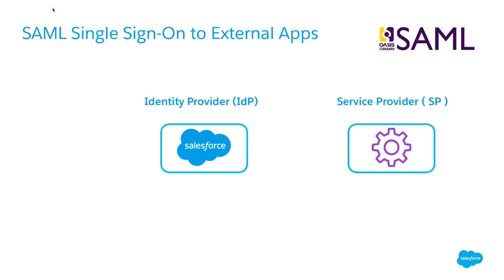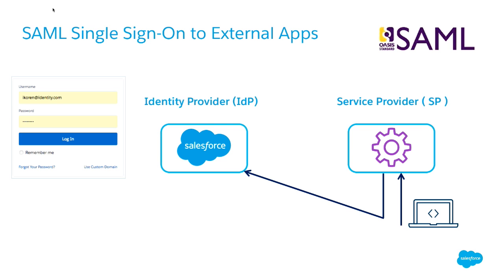So let's start with SAML. If you're not familiar with the SAML protocol, here's how it works in a nutshell. There are two main entities. On the left side, we have the identity provider — this is basically Salesforce, where you manage your user identity and run the authentication services. On the right side, you have the service provider — the web application or cloud application that you want to integrate with single sign-on services. When a user wants to log into the service provider, they open the browser, type in the service provider login URL, and then the service provider will automatically redirect them to the identity provider. The identity provider might ask them to authenticate if the user doesn't have a live session with the IDP yet.